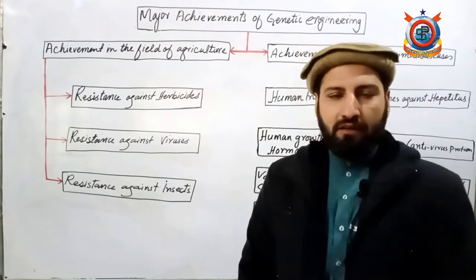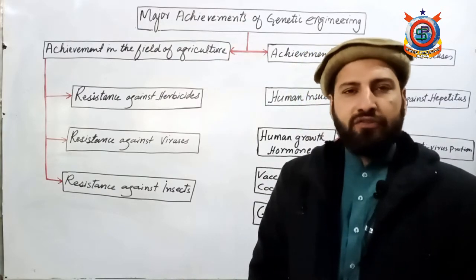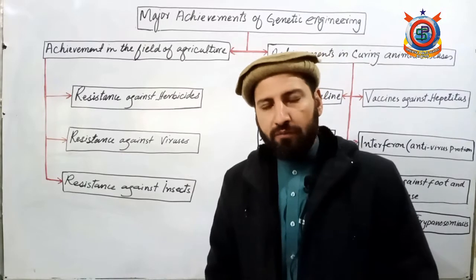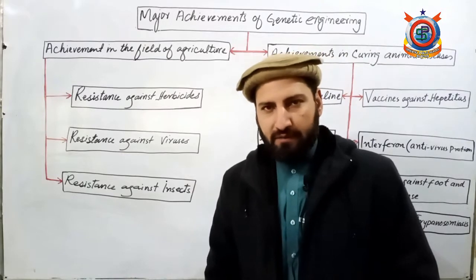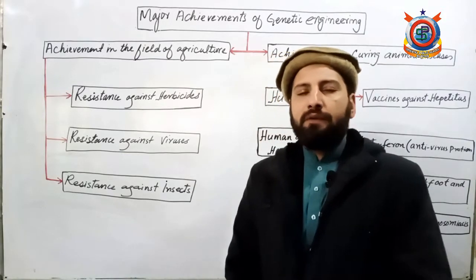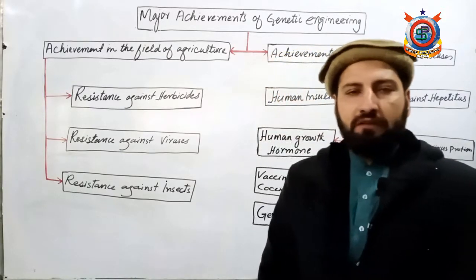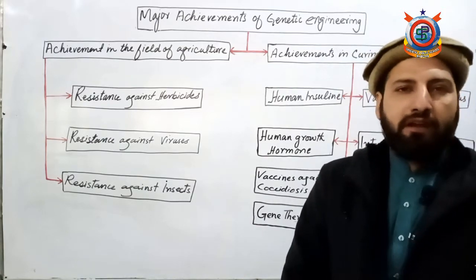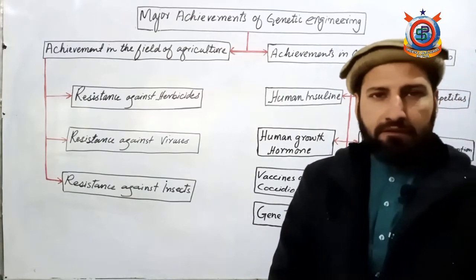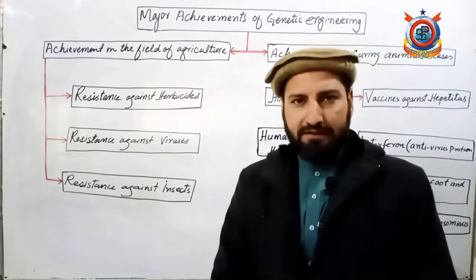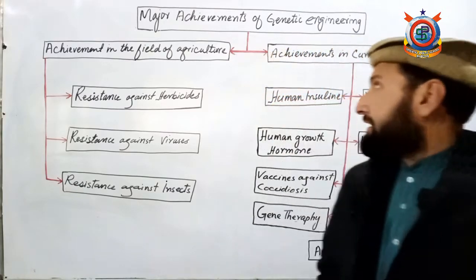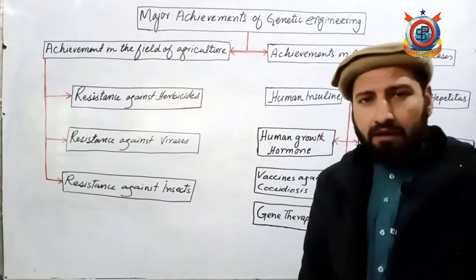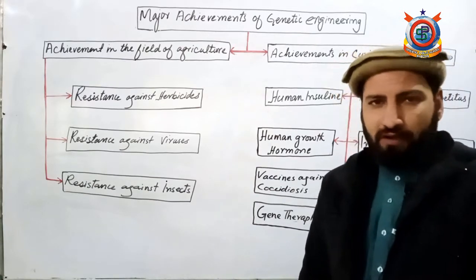Genetic engineers نے genetic engineering کے field میں کیا کیا achievements کیے ہیں۔ Achievements کو ہم دو major headings کے ساتھ پڑھیں گے: پہلی heading - achievements in the field of agriculture، اور دوسری heading - achievements in the field of curing animal diseases.